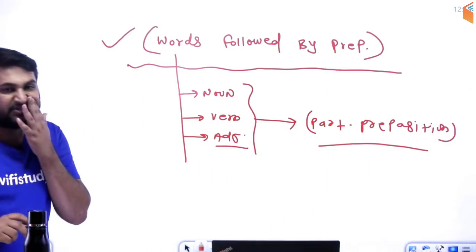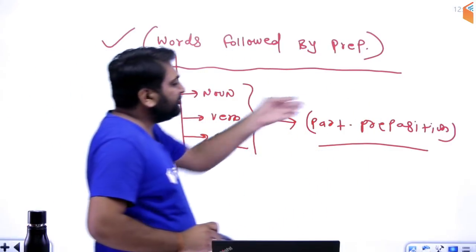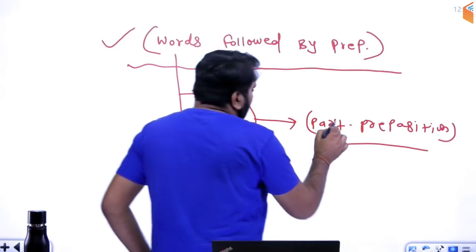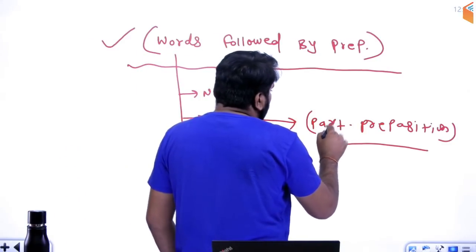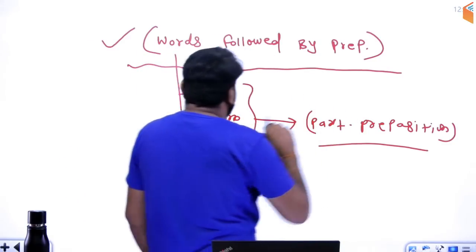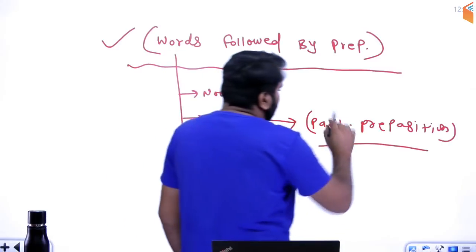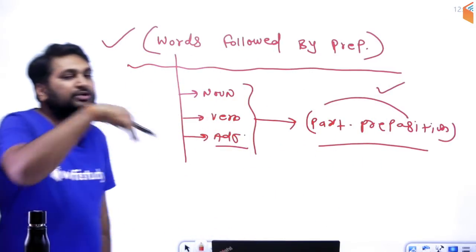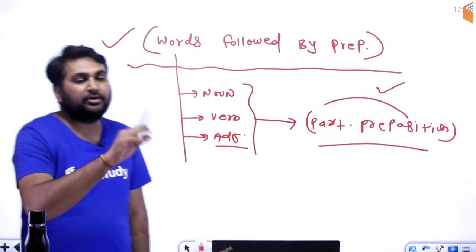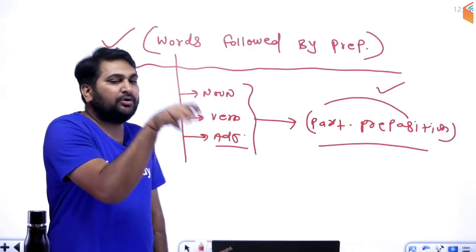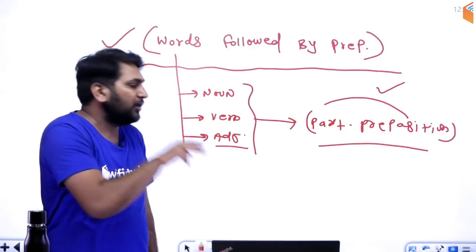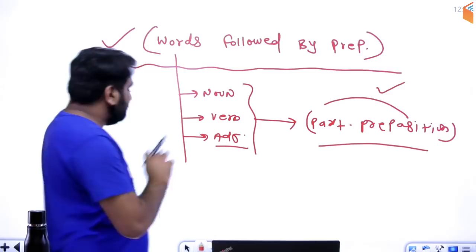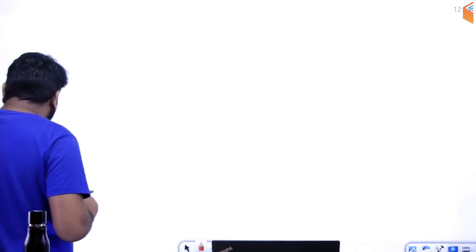Waise preposition koi ek fixed cheez nahin hoti — woh actually context ke according ek particular preposition aata hai. Hum bolte hain fix preposition, lekin woh basically context ke according istamal hota hai. Ek particular uska meaning hota hai, ek particular uska sense hota hai, jis wajah se woh particular preposition aa raha hota hai.